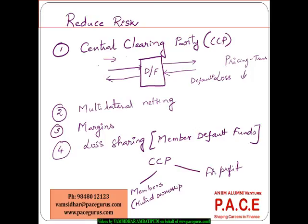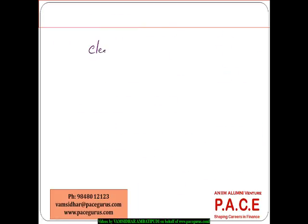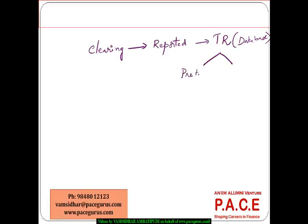Whatever clearing happens through these CCPs, it has to be reported — the data has to be reported to trade repositories, which are centralized databases for all OTC derivatives. They actually contain pre-trade information, whatever codes have been provided, and even post-trade information. This is the place where more transparency is required: at what price was the trade executed? There is a lot of negotiation between parties, so the codes as well as the executed price — all of them, once the clearing has happened — have to be reported to the trade repository.